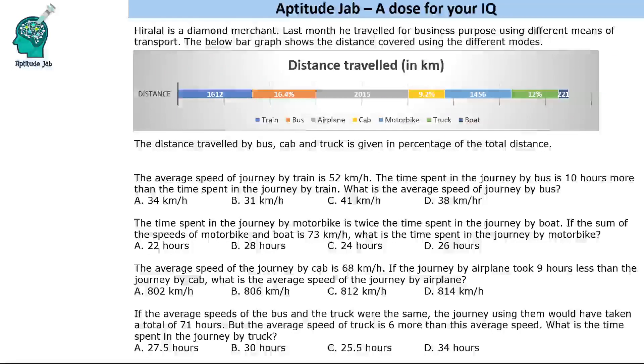Hello everyone, welcome to Aptitude Jab. This is a set based on bar graph. It says that Hiralal is a diamond merchant and he traveled for business purposes using different means of transport. The bar graph below shows the distance covered using the different modes.